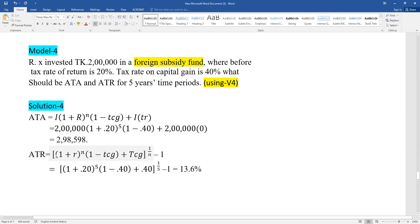ATR equals: [(1 + r)^n times (1 - tcg) plus tcg] to the power of 1/n minus 1.